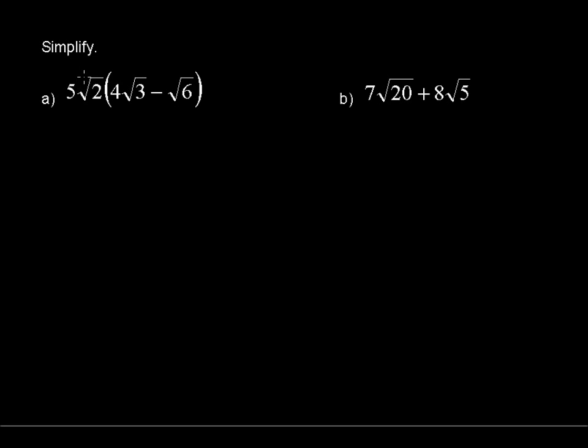Just like with polynomials, we'll use the distributive property. That is, multiply 5√2 times each of 4√3 and -√6.